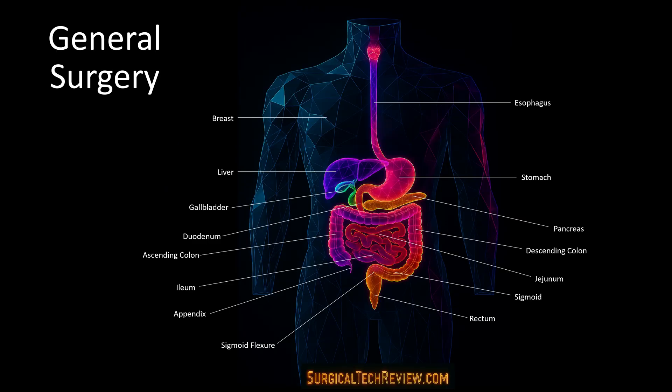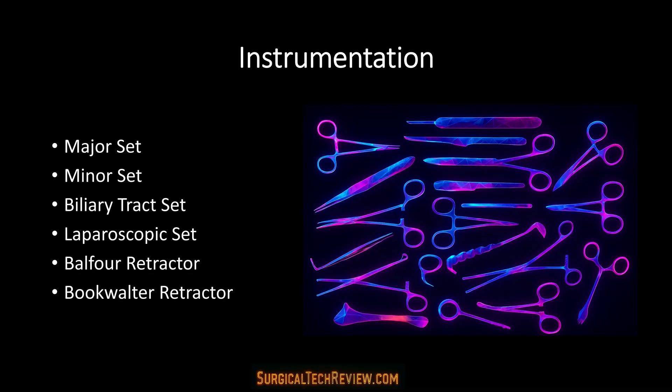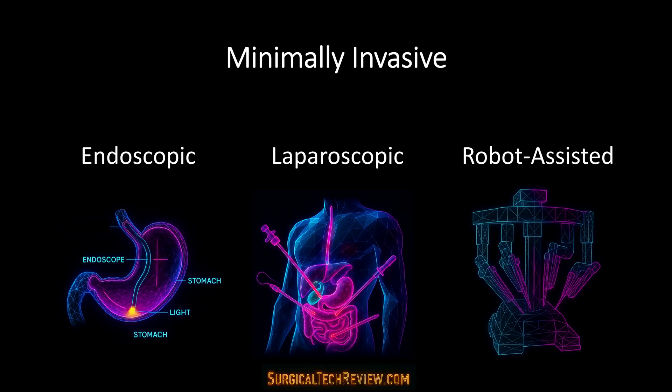General surgery involves procedures on organs such as the stomach, pancreas, colon, liver, and more. Understanding anatomical relationships is essential before learning surgical steps. Instruments include major and minor sets, biliary tract instruments, laparoscopic tools, and retractors such as the Balfour and Bookwalter. Surgery may be performed using endoscopic, laparoscopic, robotic, or open approaches depending on the case and patient condition.